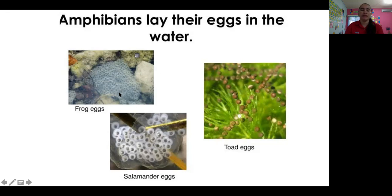The amphibians lay their eggs. Here we have examples of frogs. These are the eggs from the frog. These are the eggs of the toad — these are a little bit bigger. And these are the eggs of the salamander.